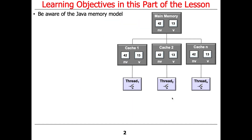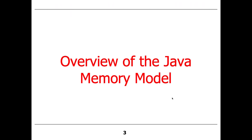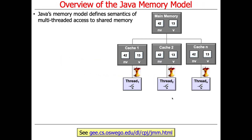In order to do this properly, we have to talk about the Java memory model first. The Java memory model is a document — it's part of the Java specification. I'll give you a link to the specification itself later. It basically describes the semantics, or the meaning, of multi-threaded access to shared memory in Java programs.